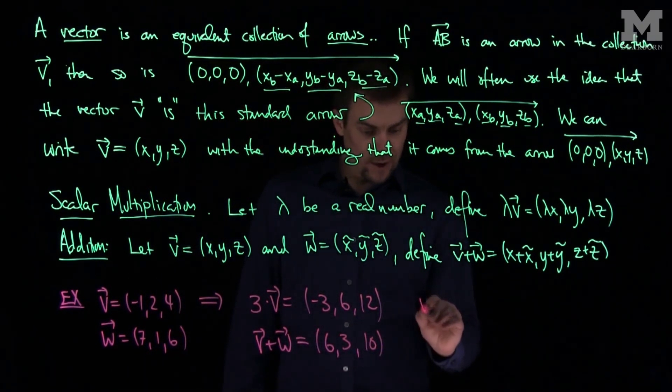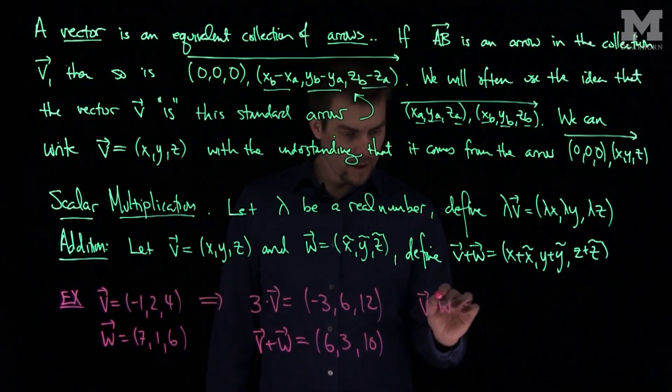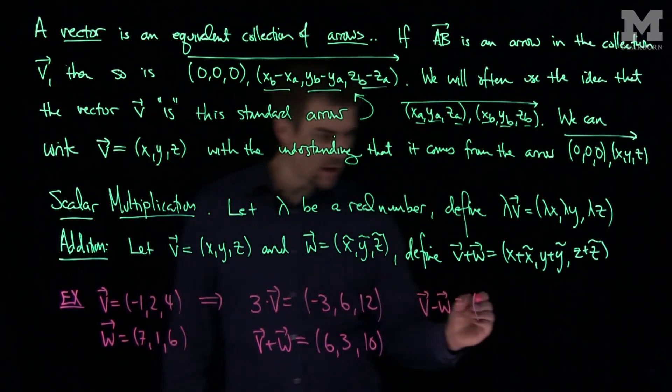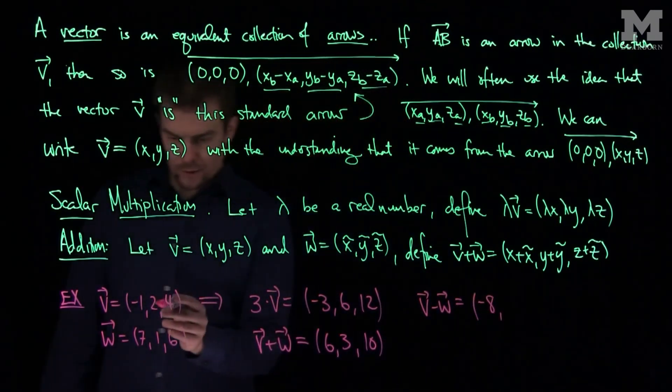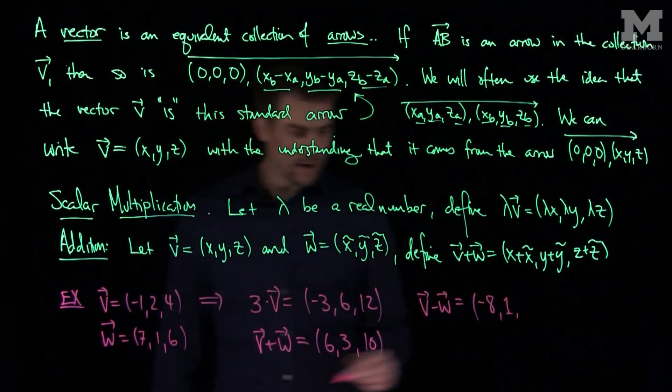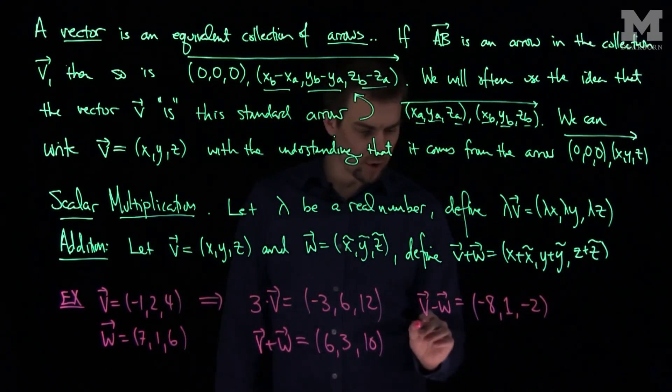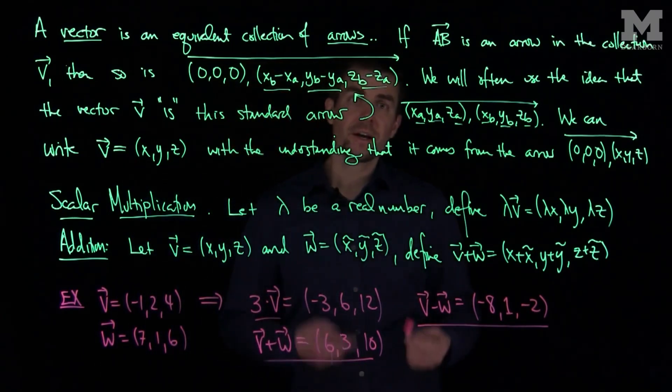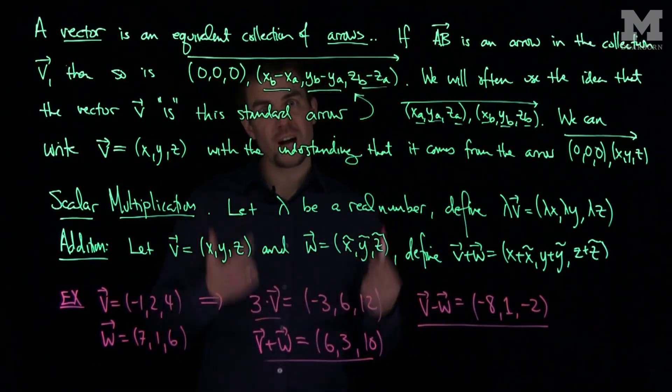We can also do vector subtraction. V minus W would be -1 minus 7, that's -8. Two minus one, that's 1. And 4 minus 6, that's -2. So that's the difference of vectors.